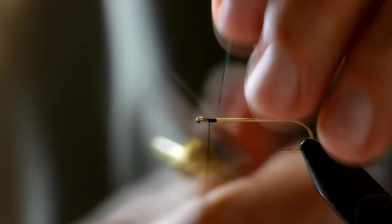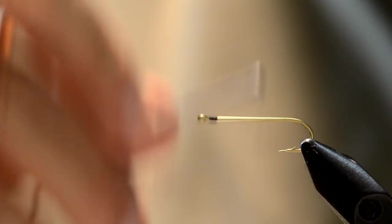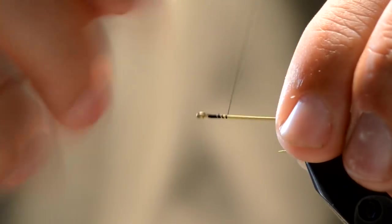I'm going to go ahead and start off with some black thread. I usually tie this back to front, so I'm going to dress the hook back to just in front of the hook point here.